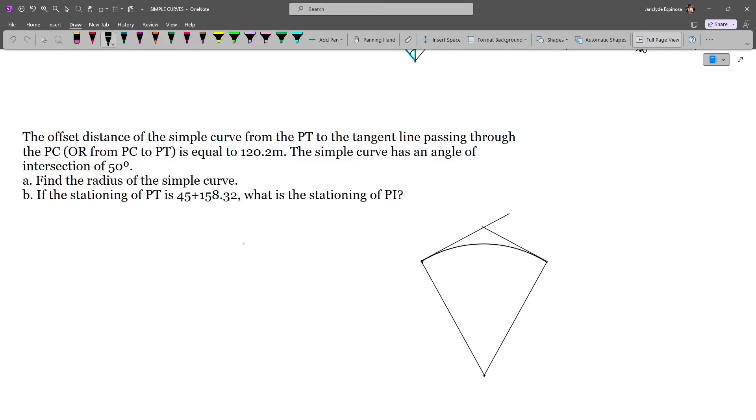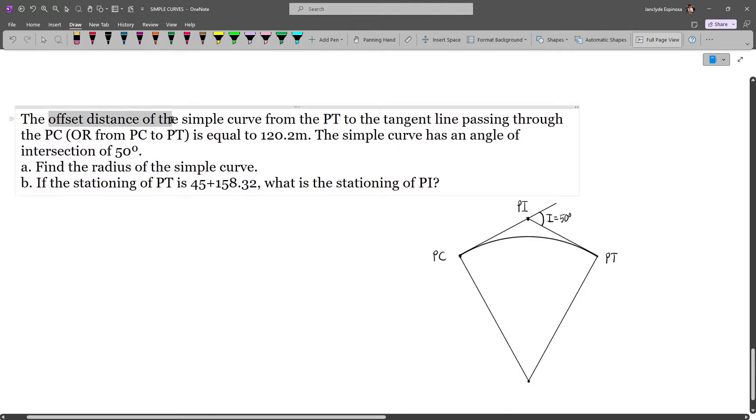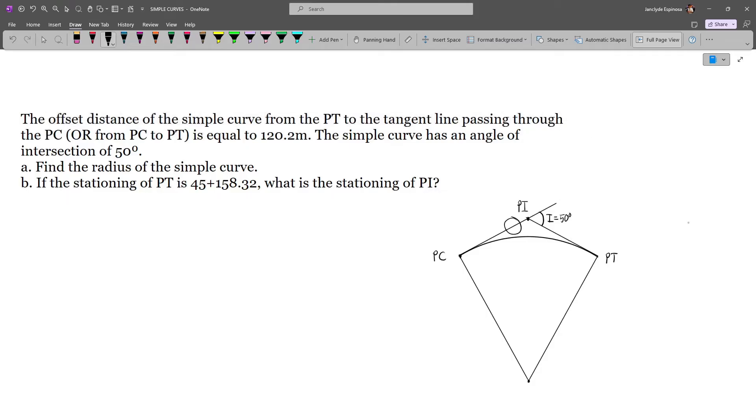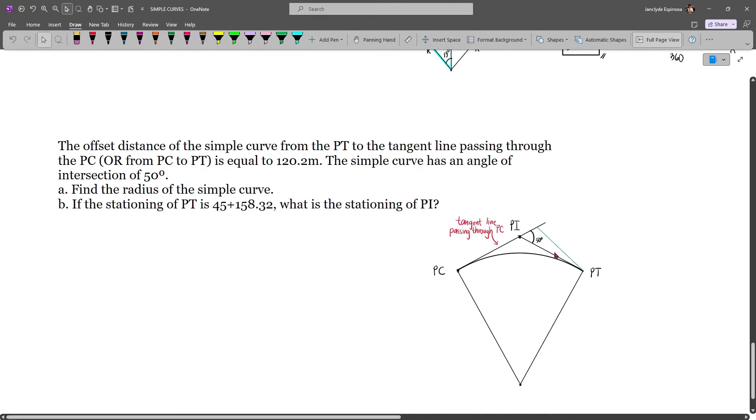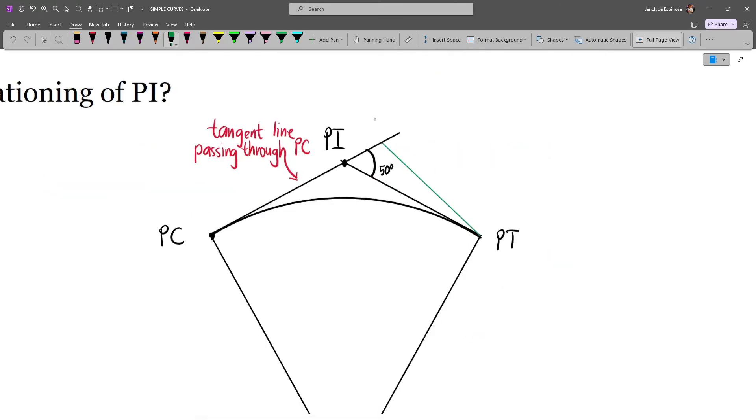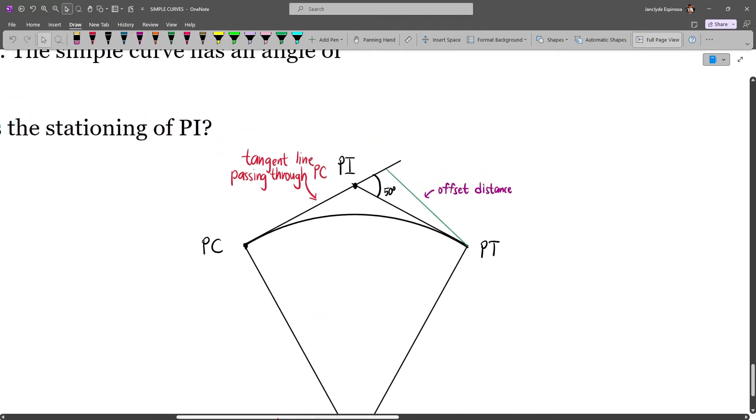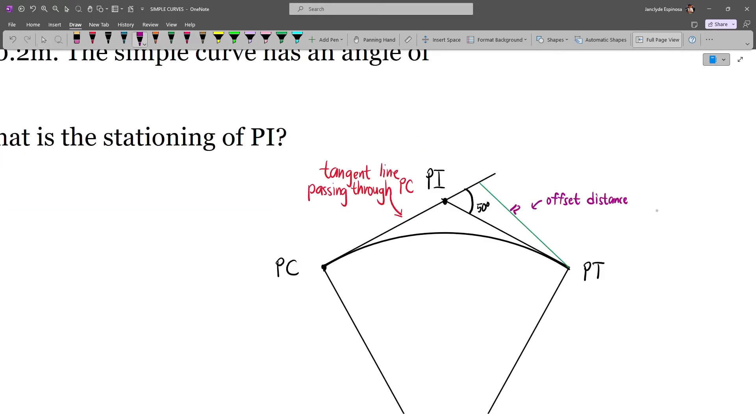Now let's first label our figure. This is PC and then this is PT, and then the vertex is PI or the point of intersection, and then this is our intersection angle I, so this is 50 degrees. Now we are given the offset distance of the simple curve from the PT to the tangent line passing through the PC. This is the tangent line passing through the PC. If we hear offset distance, that forms a 90 degree angle with our tangent line. Since it is from PC to PT, then it will actually be this line. This green line is the offset distance from PC to PT, which is 120.2m.